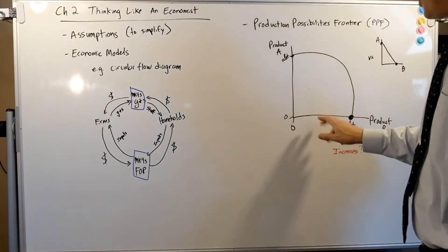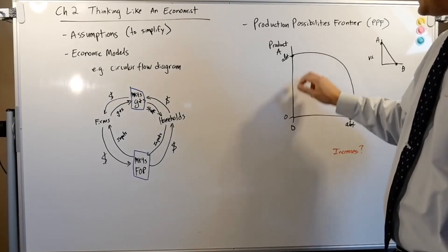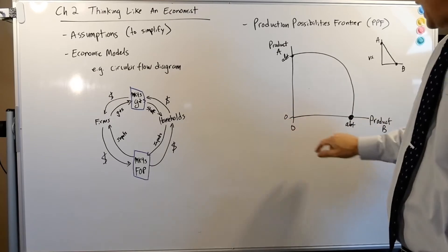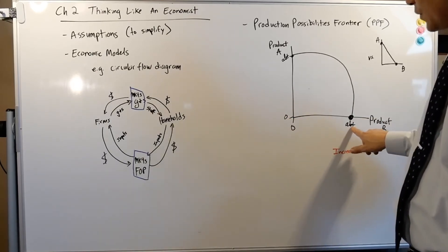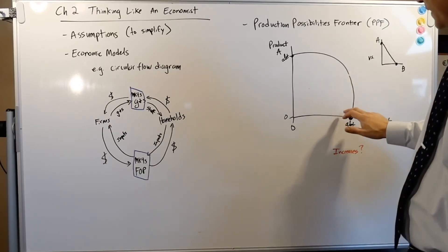If I produce zero product B, I can make a lot of product A. If I produce zero product A, I can make a lot of product B. Chances are I'm going to make somewhere in between. I'm going to draw a line and dot it right there and that'll tell me how much of product A and product B I'm making.